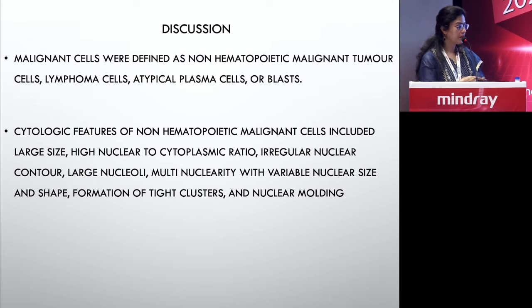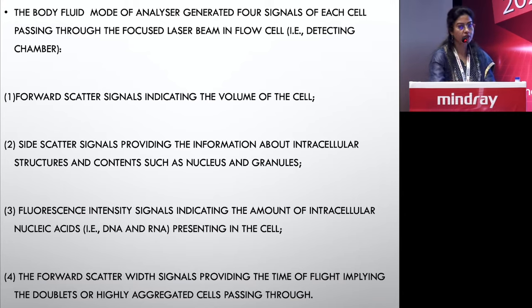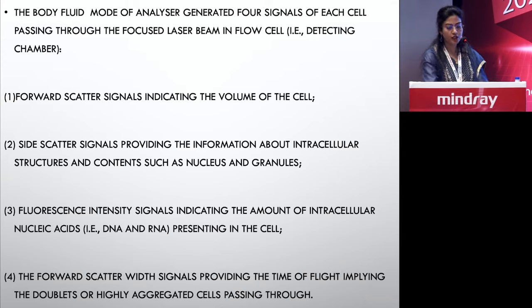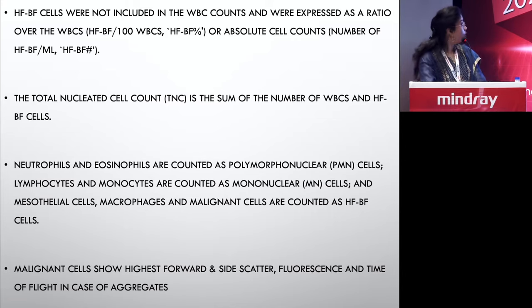In summary, automated analyzers attempt to pick up malignant cells but also pick up mesothelial cells, so both appear in the high fluorescent area. If you take only the forward scatter based on cell size, cancer cells — which have varied size and morphology — can sometimes be missed in the high fluorescent area, particularly if they are smaller.